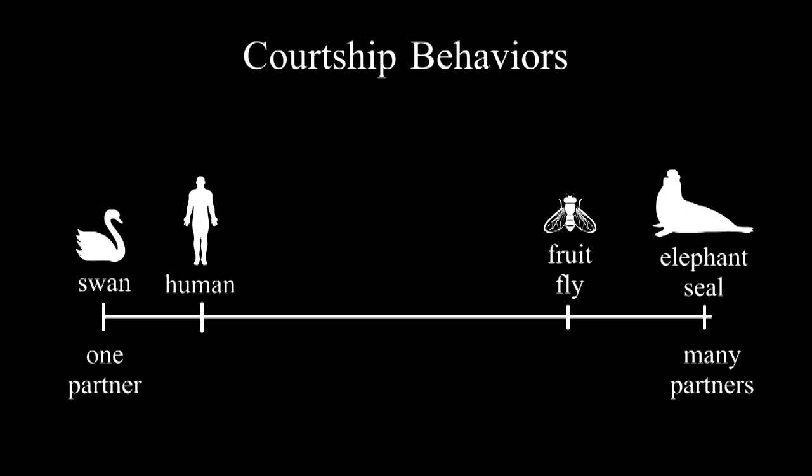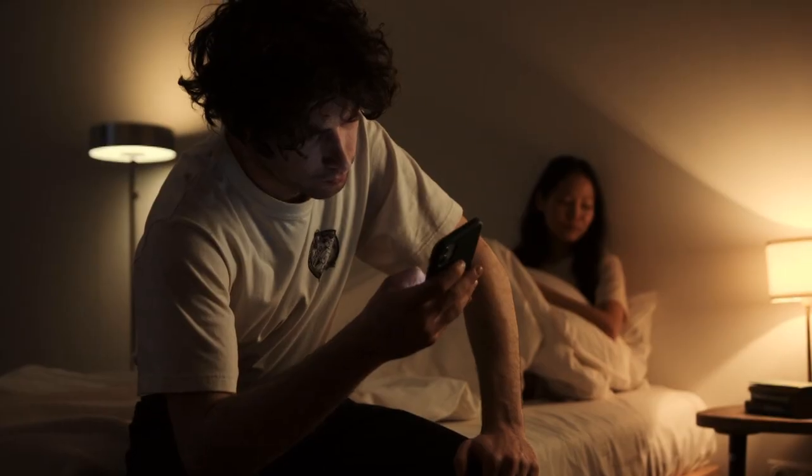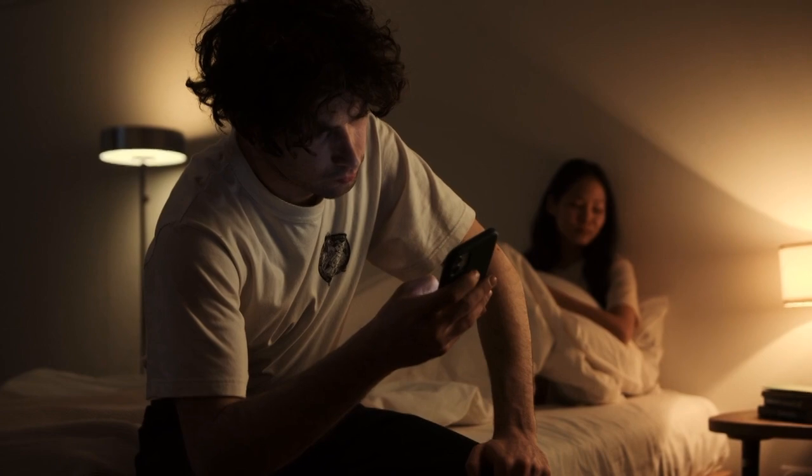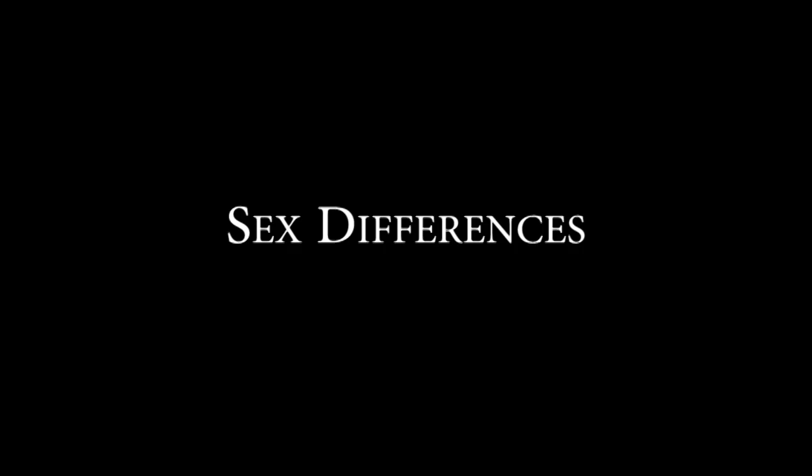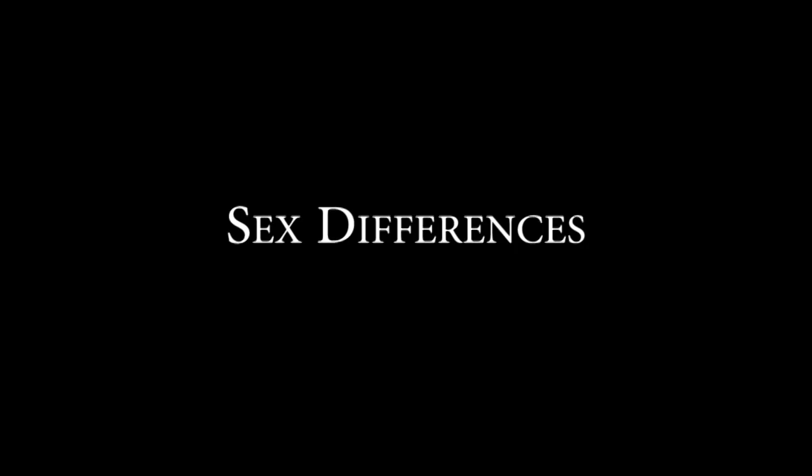Humans are sort of monogamous. Monogamy is the norm, but casual sex, cheating, and adultery are not uncommon. This explains some of the differences between men and women.